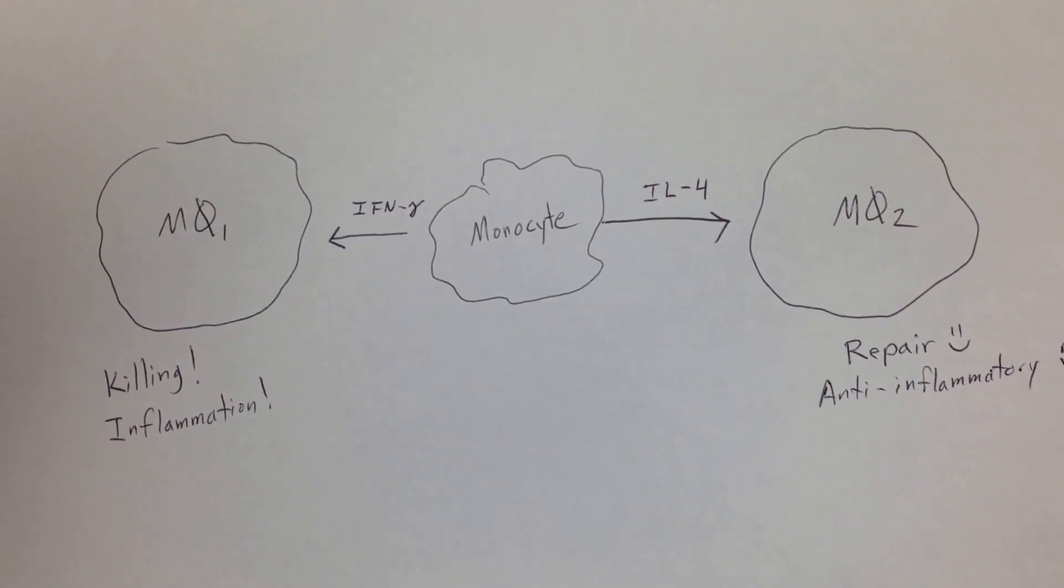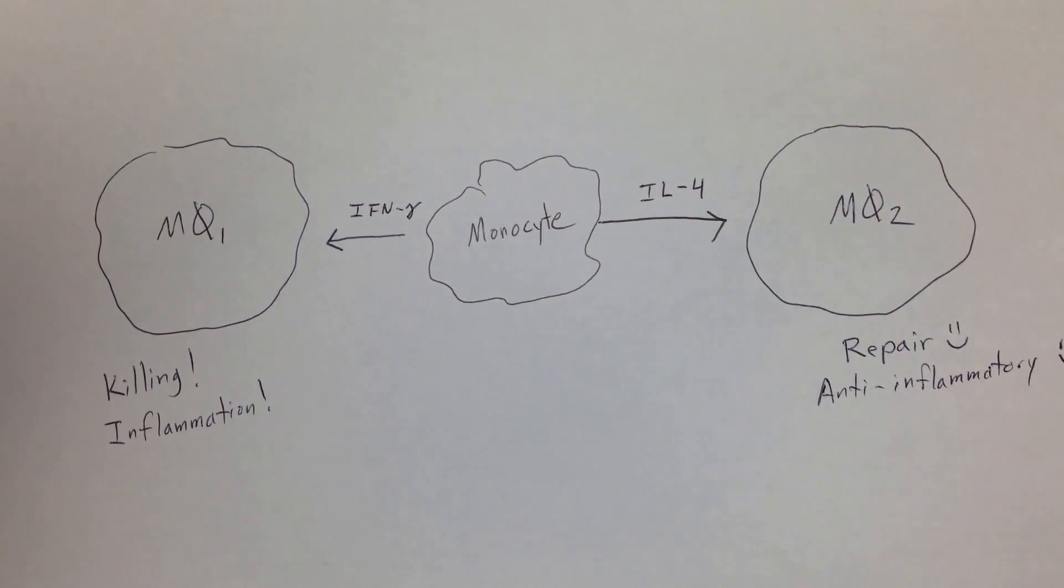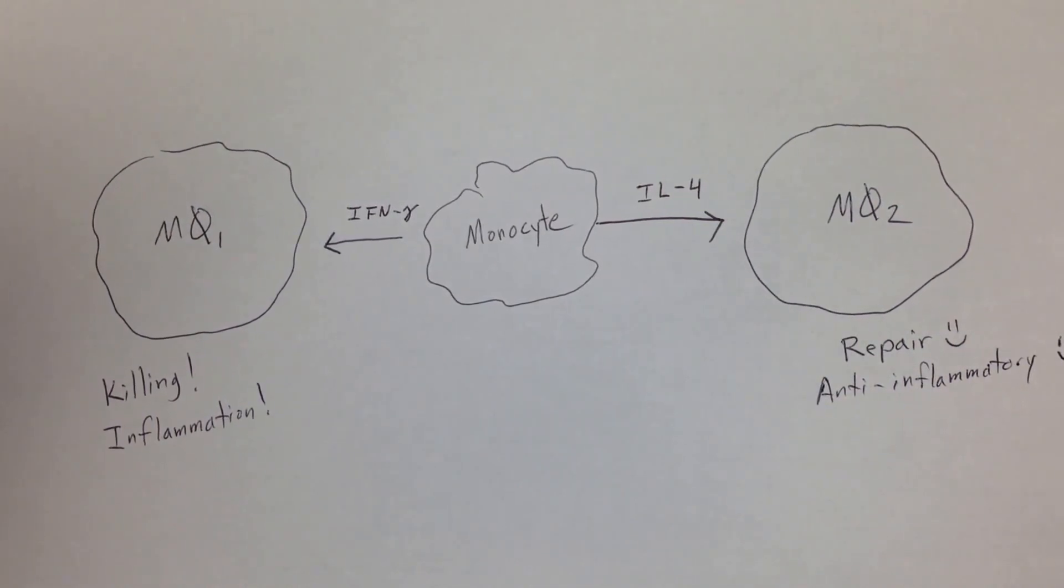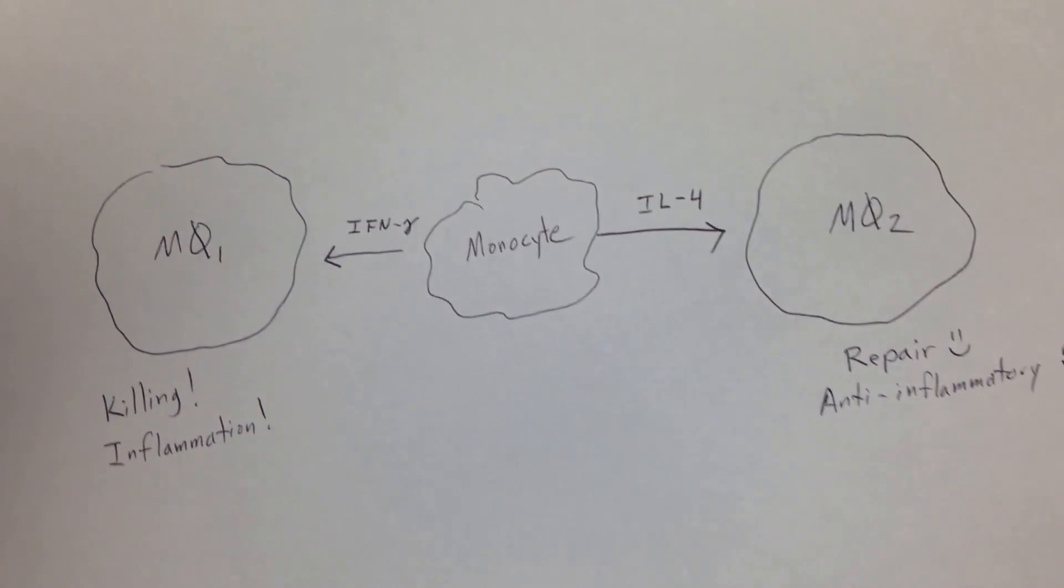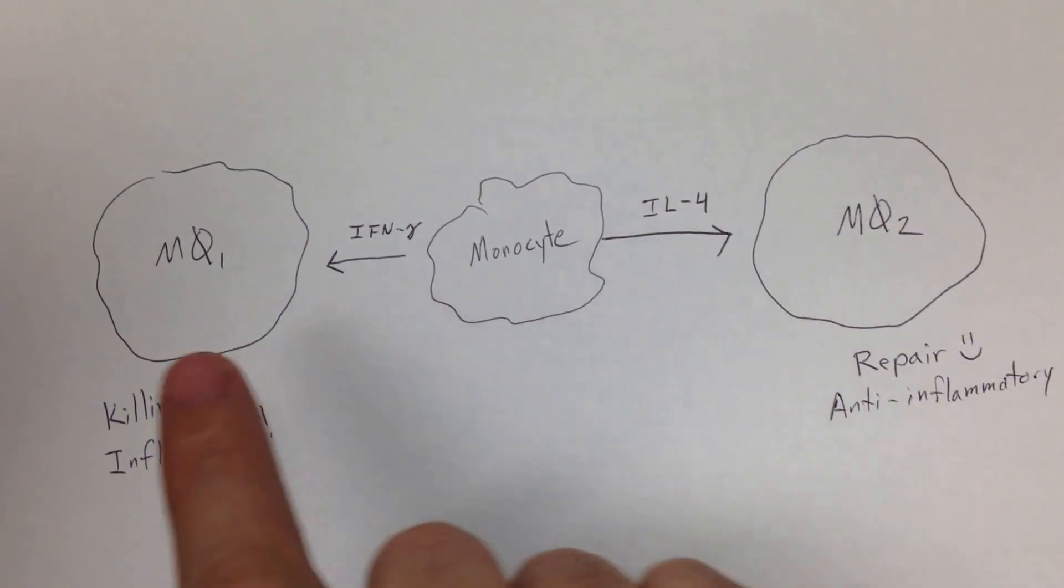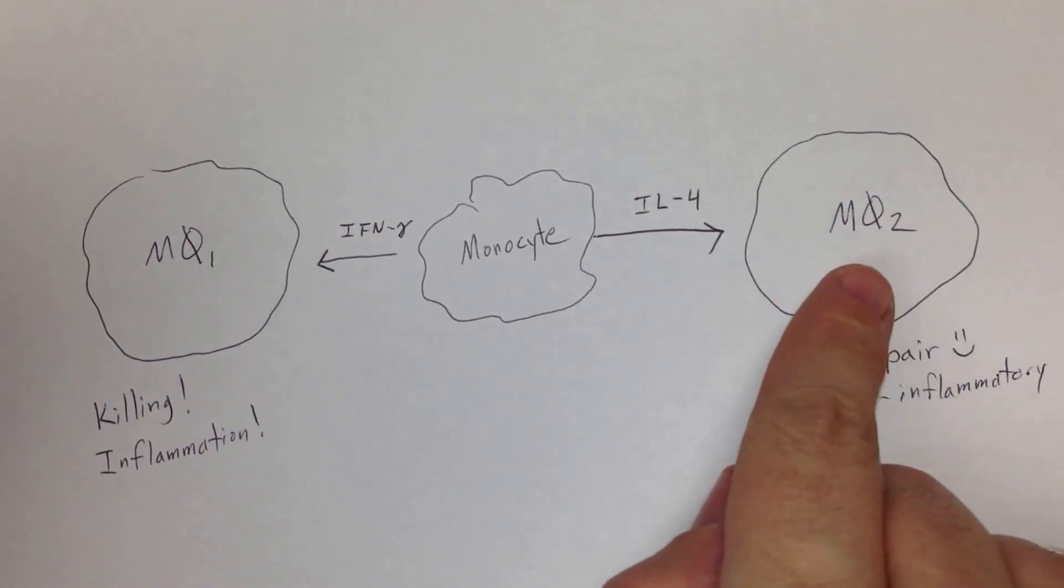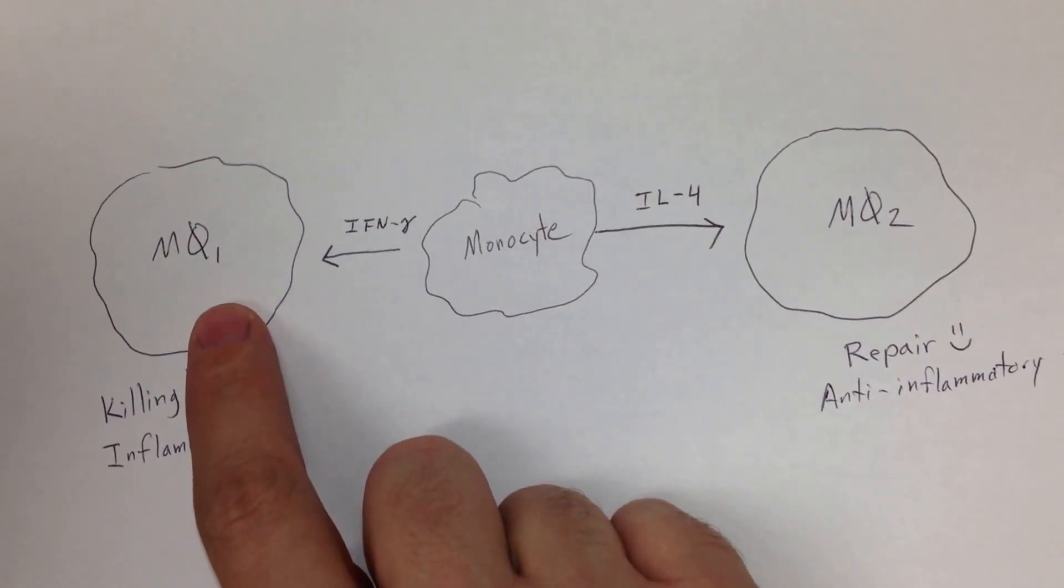Okay, we are back for part two of the macrophage cytokines video. Last time we talked about how the monocyte differentiates into two types of macrophage: macrophage type one and macrophage type two. We did the video talking about the cytokines for macrophage type one.